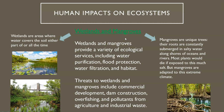Wetlands and mangroves come up often on this test. Wetlands are areas where water covers the soil either part of or all the time. Mangroves are unique trees whose roots are almost constantly submerged in super salty waters along coasts or rivers — most plants would die in these conditions, but mangroves are adapted to this climate and they thrive in it. Wetlands and mangroves provide a lot of ecosystem services: they clean water, help protect against floods, filter water, and provide tons of habitat for other animals. They're also being threatened by development, commercial development, building of dams, overfishing, and pollutants from agriculture and industry.